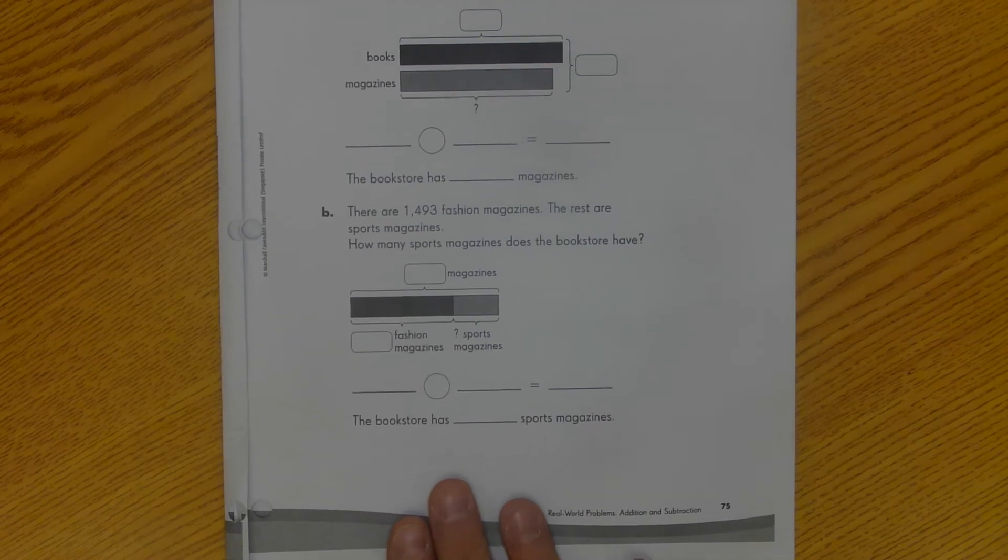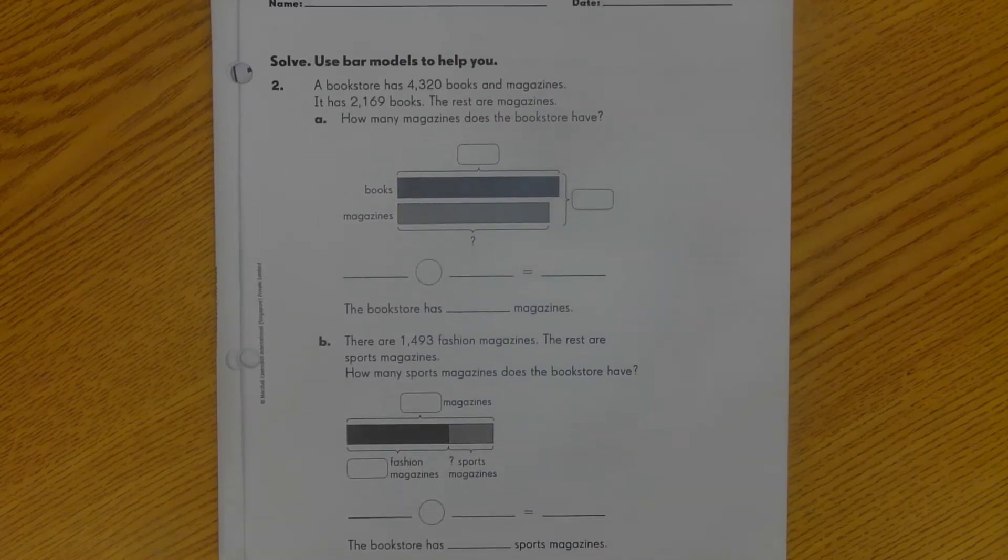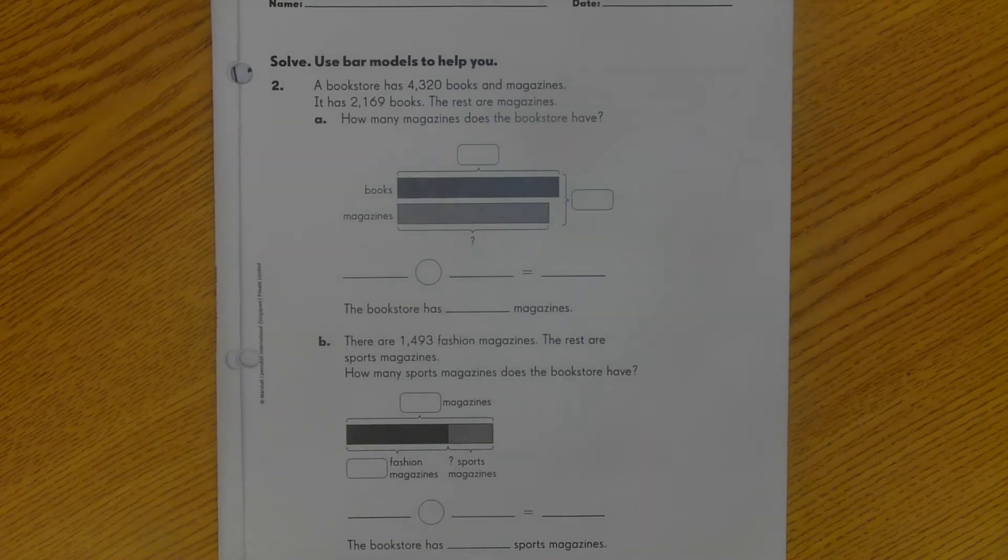B says there are 1,493 fashion magazines. The rest are sports magazines. How many sports magazines does the bookstore have? And so I can look in here at my bar model and know I have missing numbers to fill in. And then also this circle is going to identify if it's addition or subtraction. And my answer is in the form of a sentence. So those are just some setup pieces for you. Now I'm going to go ahead and just get to work.